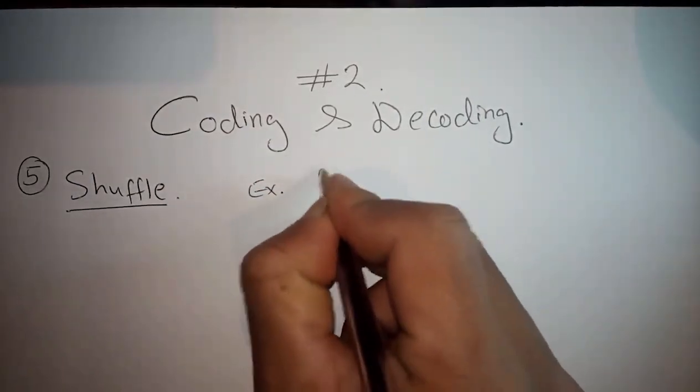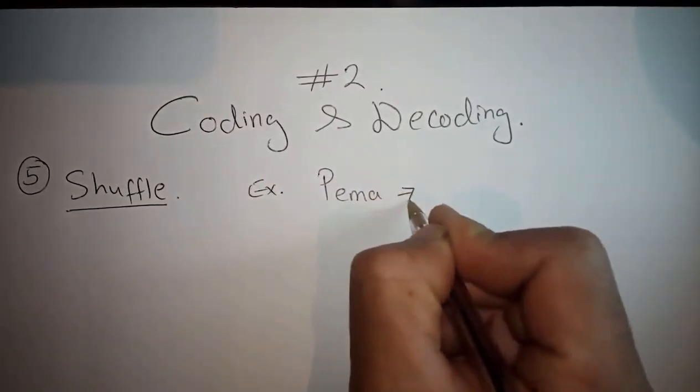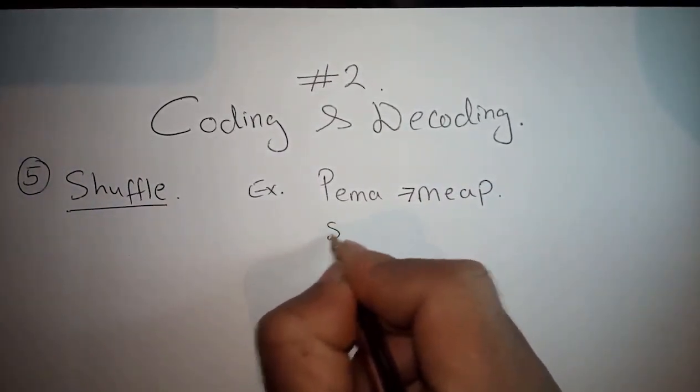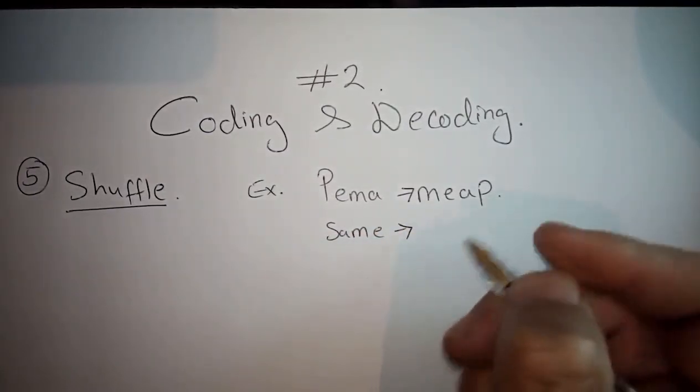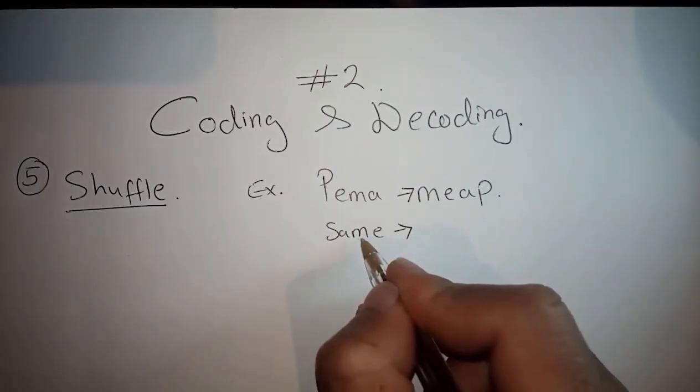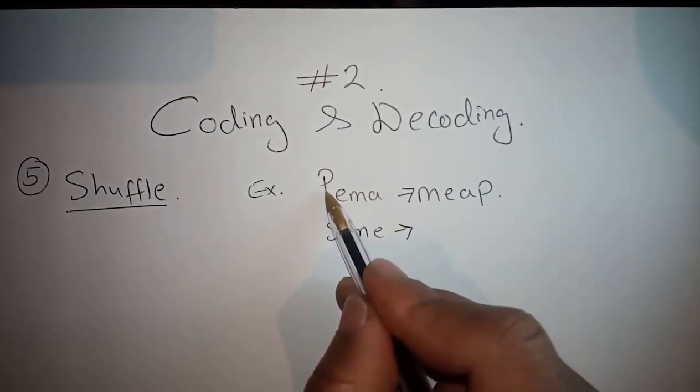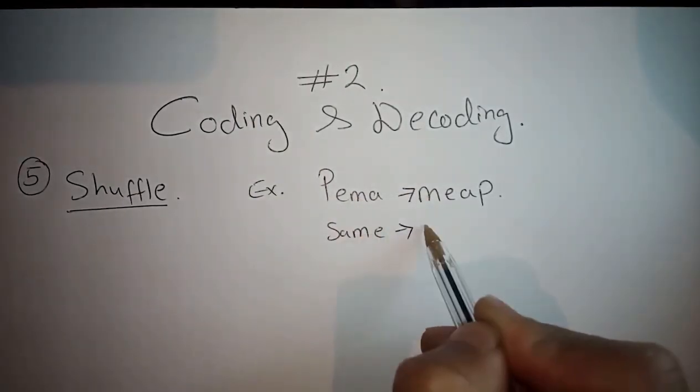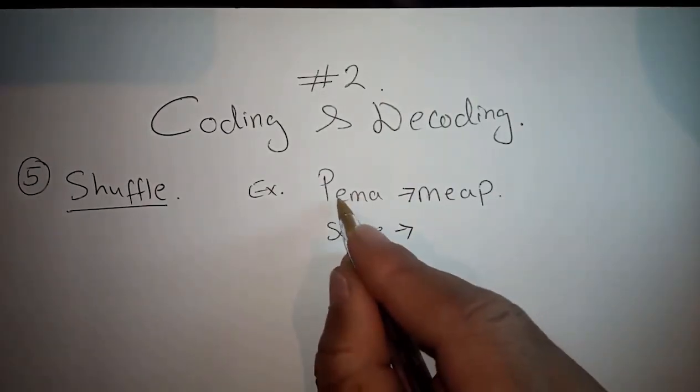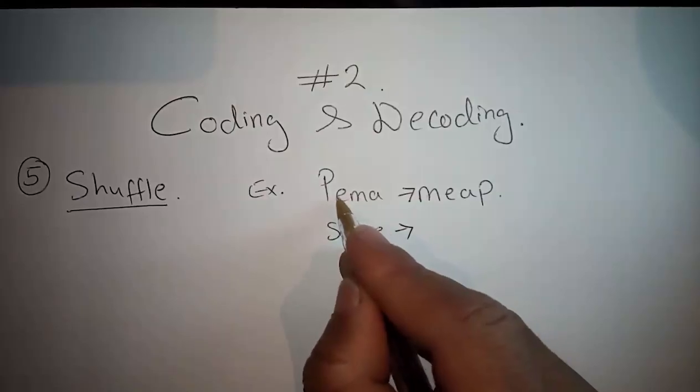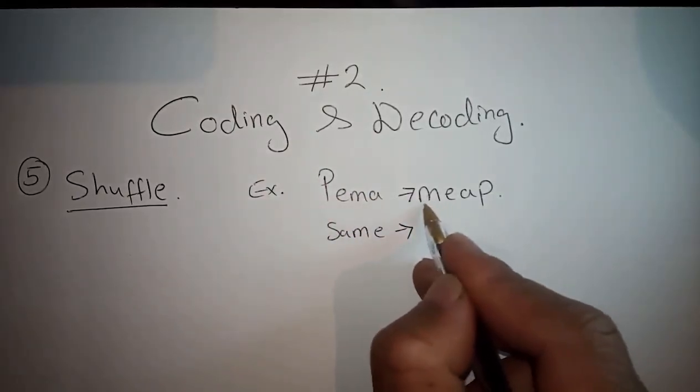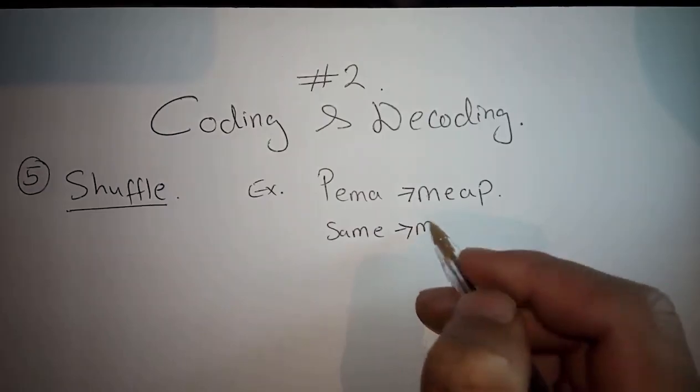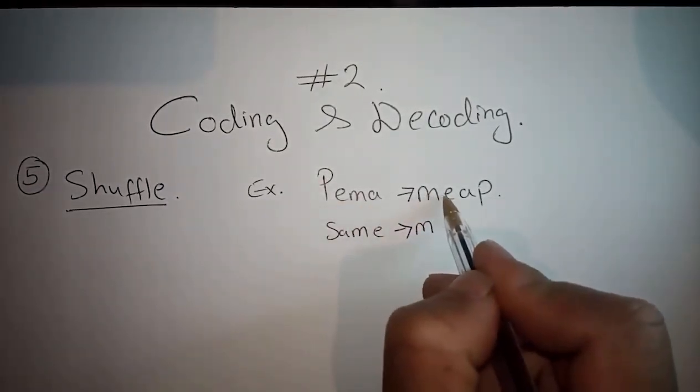Let's look at an example of shuffle. If payment is coded as MEAPLA, then how will SAME be coded? First, M comes in the first place, so we'll write M in the first place. E is in the second key, so E is the second key.